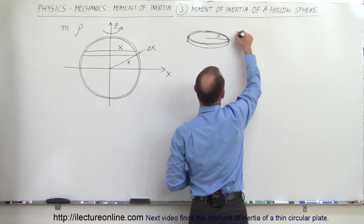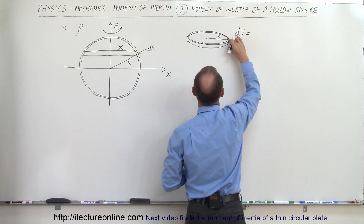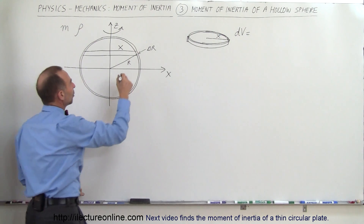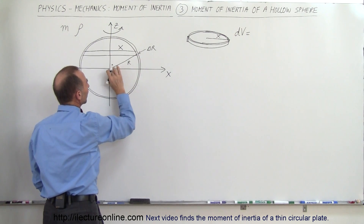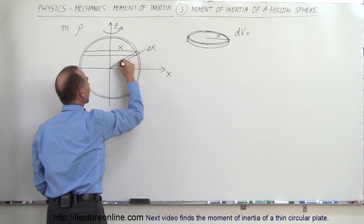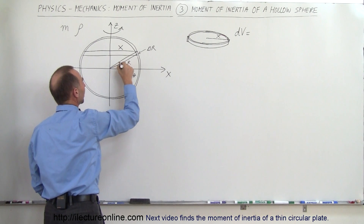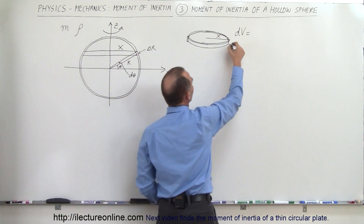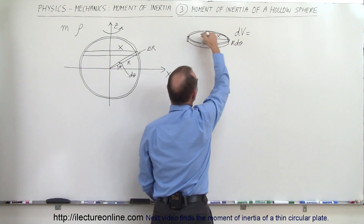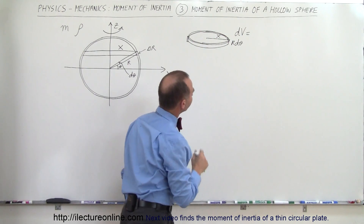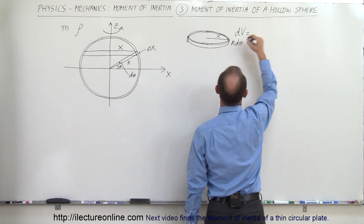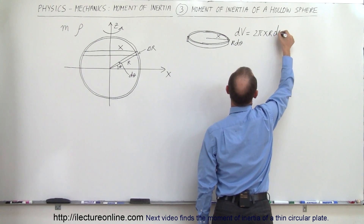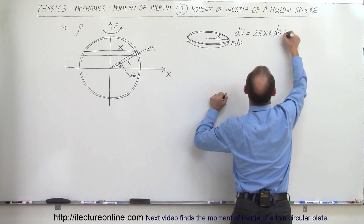Let's call it dv. dv would be equal to the circumference times the height times x. The height is best expressed by taking the radius r and sweeping through a small angle d theta, so the height of that disc would be r d theta. The distance from the axis is x, so the volume is the circumference 2π x, times the height r d theta, times the thickness delta r.